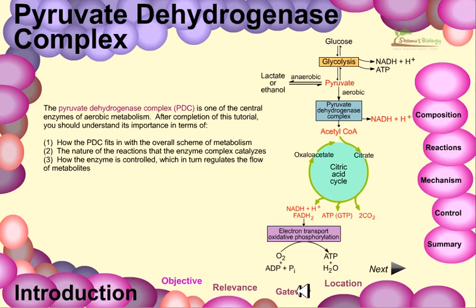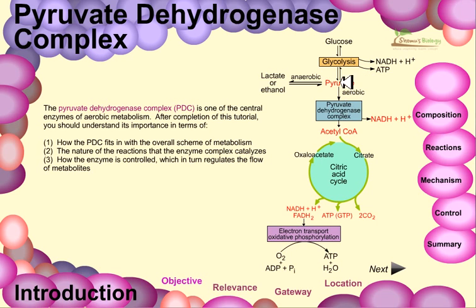Now we can see the overall picture of aerobic respiration — through glycolysis, then the Krebs cycle, then the electron transport system to generate the final energy. There are some key intermediates in these steps, like pyruvate and acetyl-CoA.